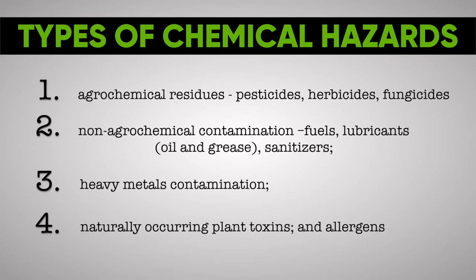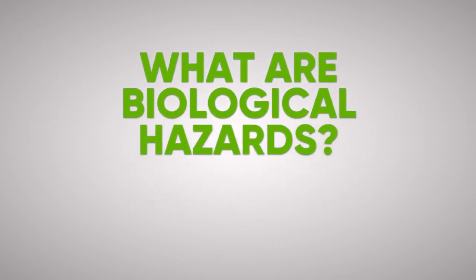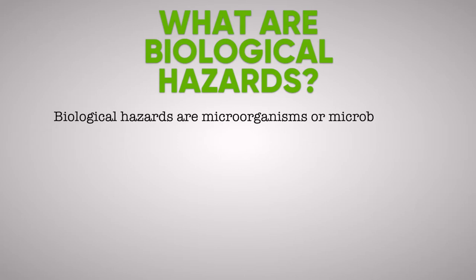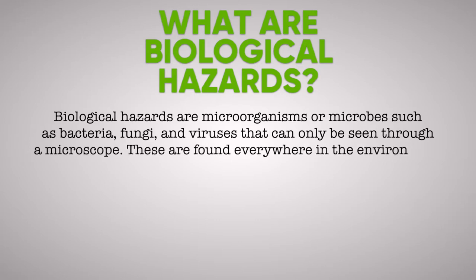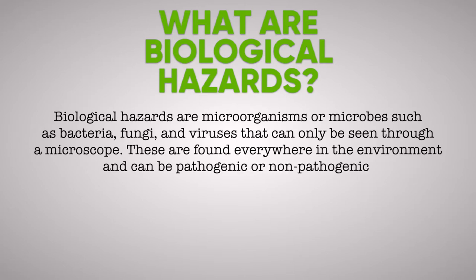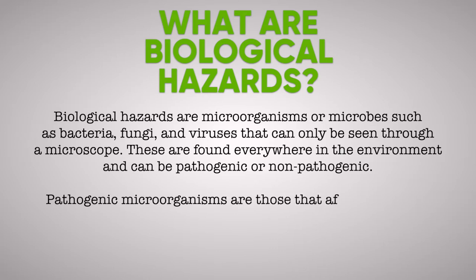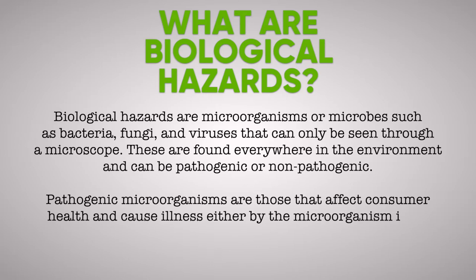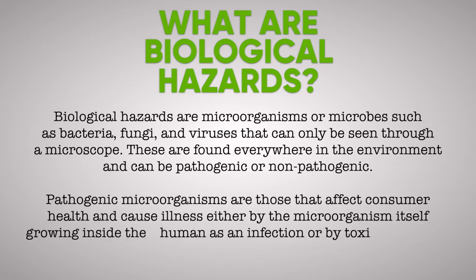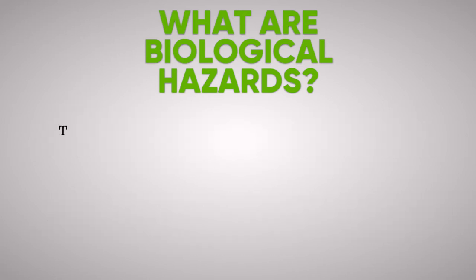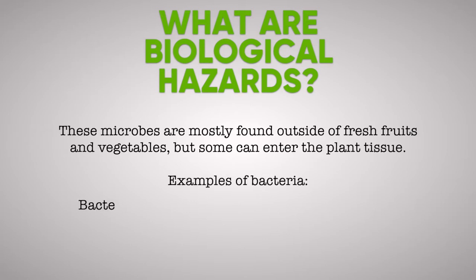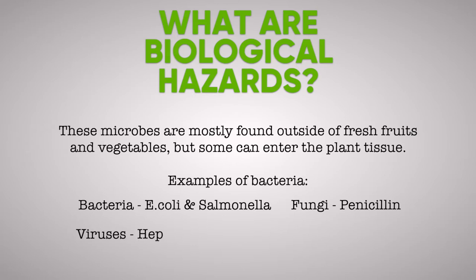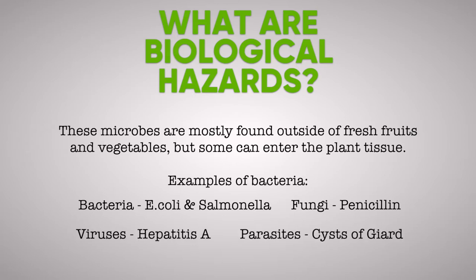What are Biological Hazards? Biological hazards are microorganisms or microbes such as bacteria, fungi, and viruses that can only be seen through a microscope. These are found everywhere in the environment and can be pathogenic or non-pathogenic. Pathogenic microorganisms are those that affect consumer health and cause illness either by the microorganism itself growing inside the human as an infection, or by toxins produced by the microorganism. These microbes are mostly found outside of fresh fruits and vegetables, but some can enter the plant tissue — for example, bacteria such as E. coli and salmonella, fungi such as penicillin, viruses such as hepatitis A, and parasites such as cysts of giardia.